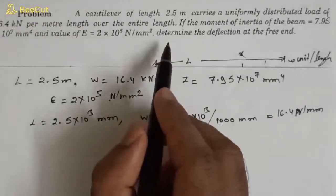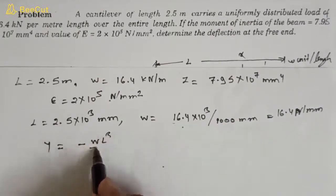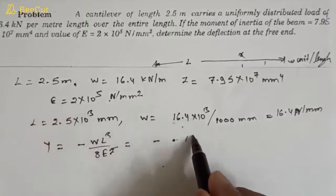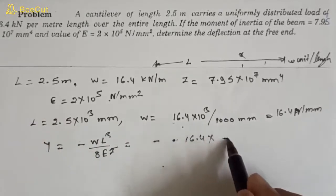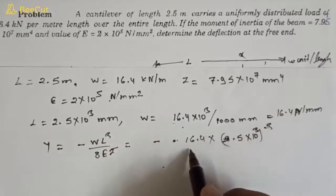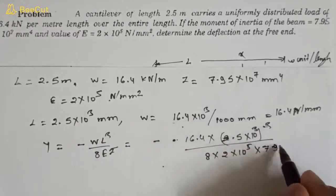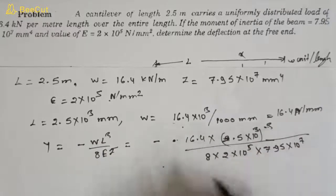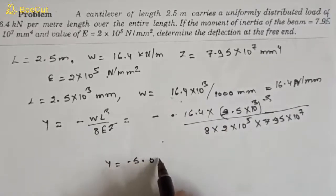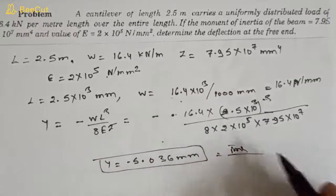We are asked only for deflection at the free end. Using y = −wl⁴/8EI, we substitute: w = 16.4 N/mm, l = 2.5 × 10³ mm, E = 2 × 10⁵ N/mm², I = 7.95 × 10⁷ mm⁴. Calculating all the values gives y = −5.036 mm. The negative sign means it is a downward deflection. This is our answer.